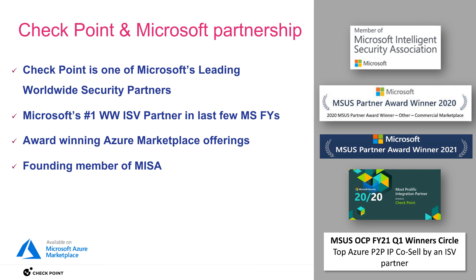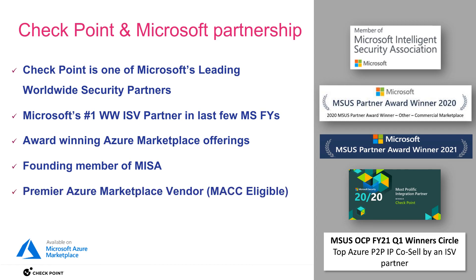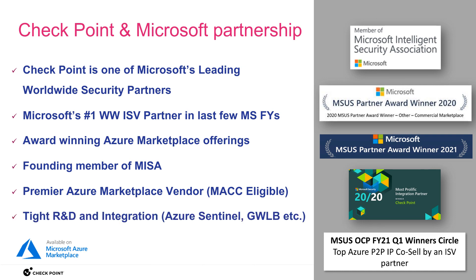We have a whole bunch of award-winning Azure Marketplace offerings. We are a premier Azure Marketplace vendor and we're also MACC eligible. MACC is Microsoft Azure Consumption Commitment, which means that if you have an enterprise agreement with Microsoft and a commitment of spend during the year, you can actually spend some of that commitment on CloudGuard network security and other CloudGuard capabilities - that counts towards your annual Microsoft spend. We have a very tight R&D relationship, business relationship, and integrations, specifically with CloudGuard network security connected to Azure Sentinel, Azure Gateway Load Balancer, and most importantly for this call, Azure Virtual WAN.